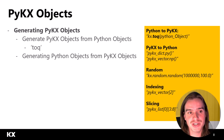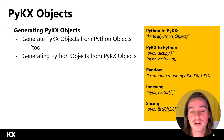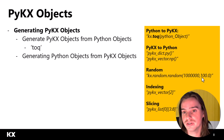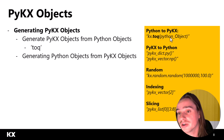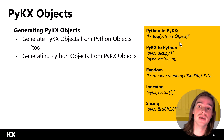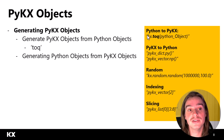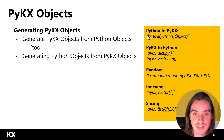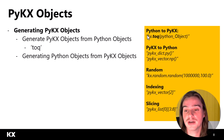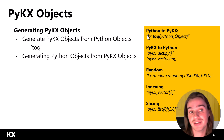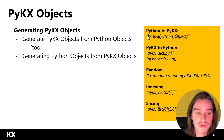For PyKx objects, we're going to learn how to generate these objects from Python objects. We can use a method called kx.2q — you can see example code right here: kx.q of whatever Python object you have. So say you had a pandas DataFrame, you could pass that DataFrame into this functionality, and it would output a PyKx table. Depending on the Python object you pass in, it will output a PyKx object of the corresponding type.